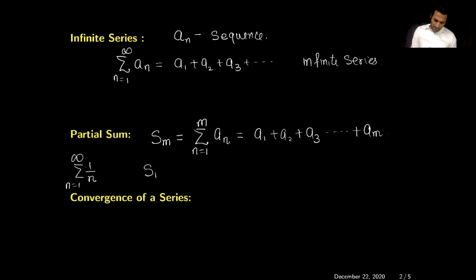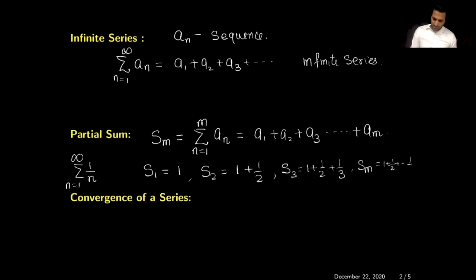For the harmonic series: S1 is just 1; S2, the sum of the first two terms, is 1 + 1/2; S3 is the sum of the first three terms; and in general, S_m = 1 + 1/2 + ... + 1/m, the sum of the first m terms.